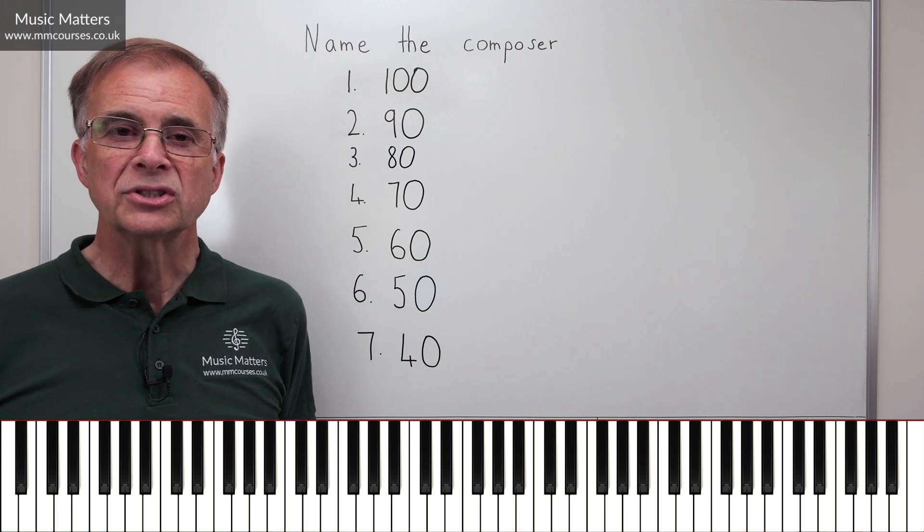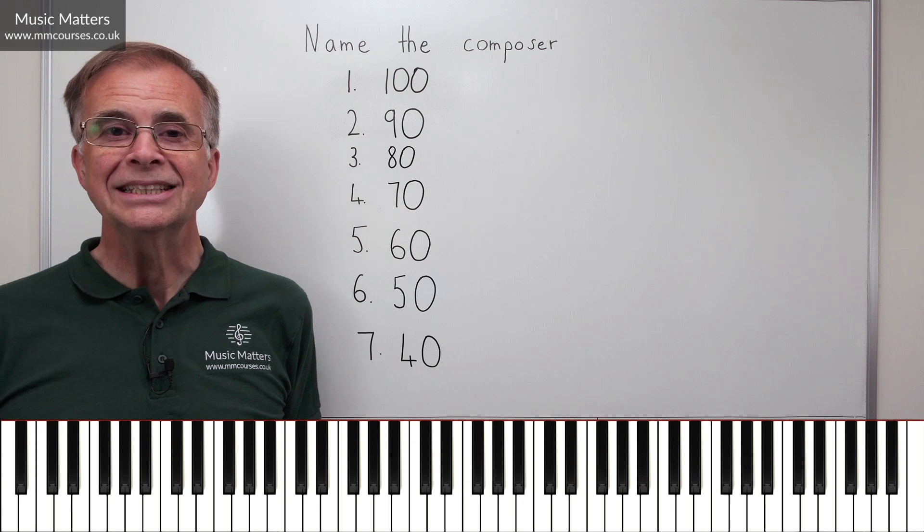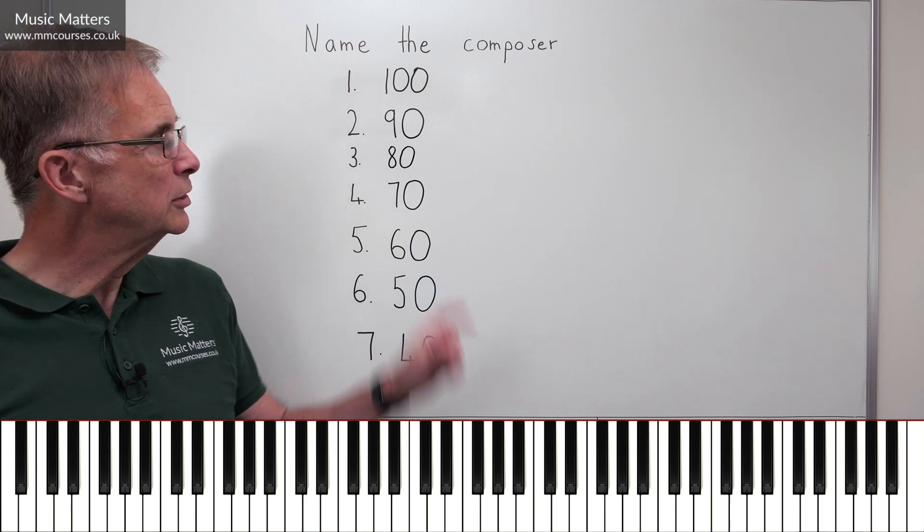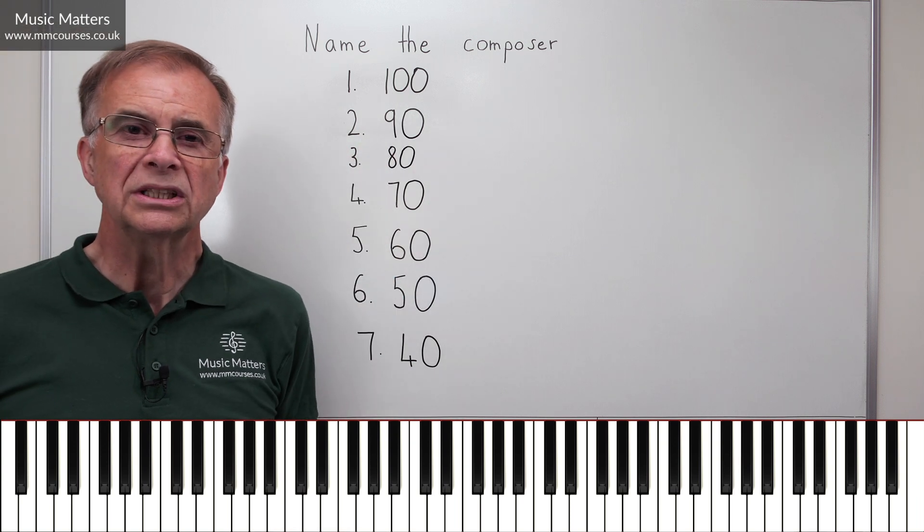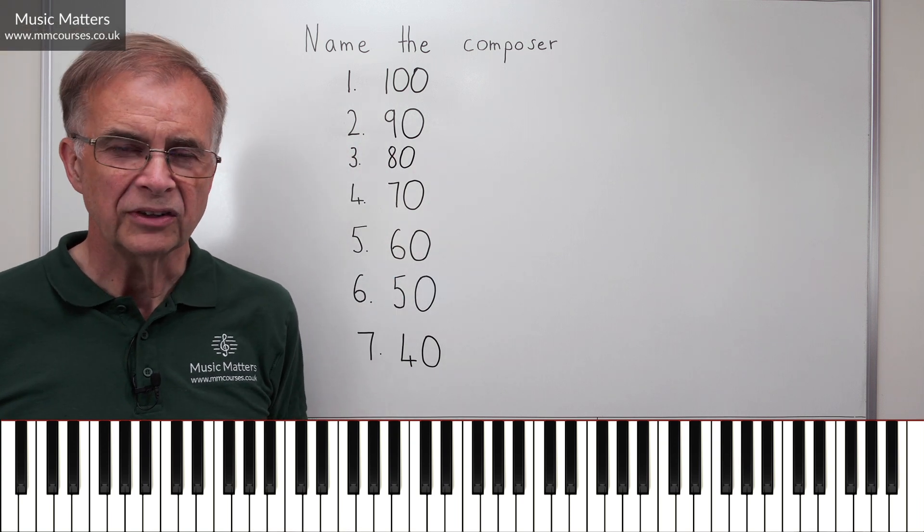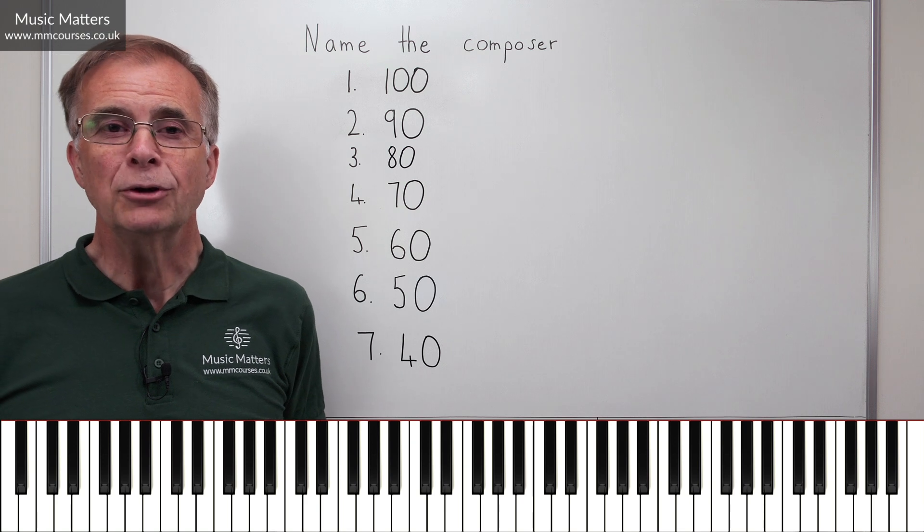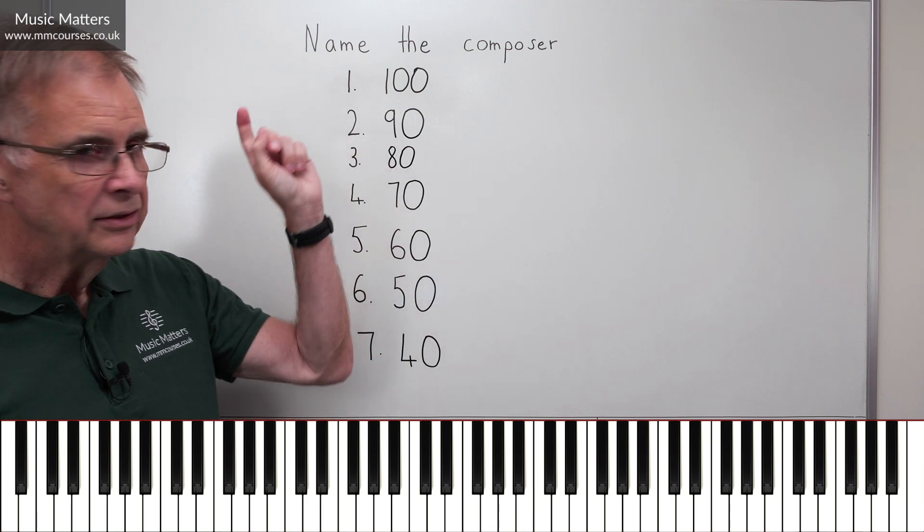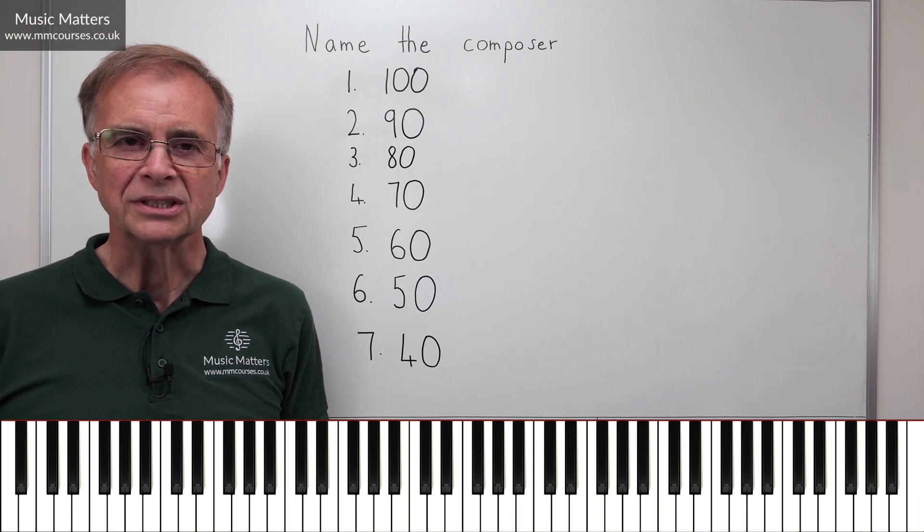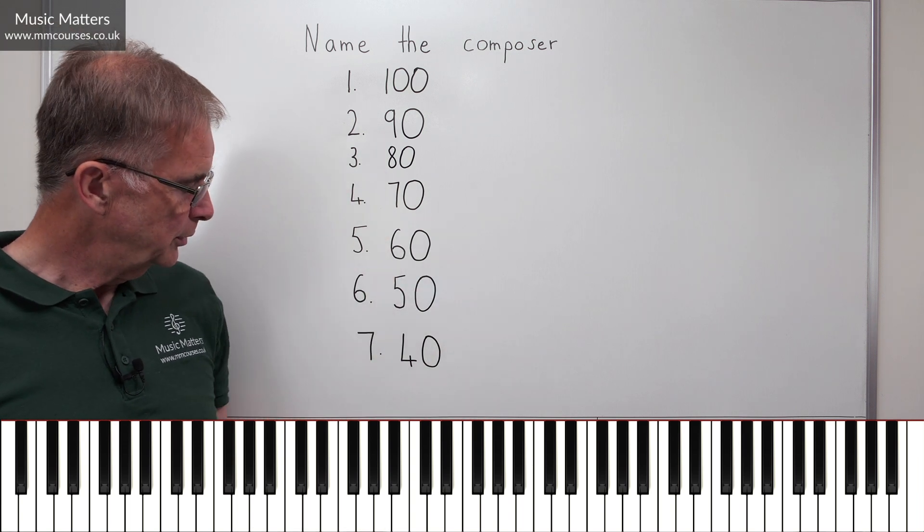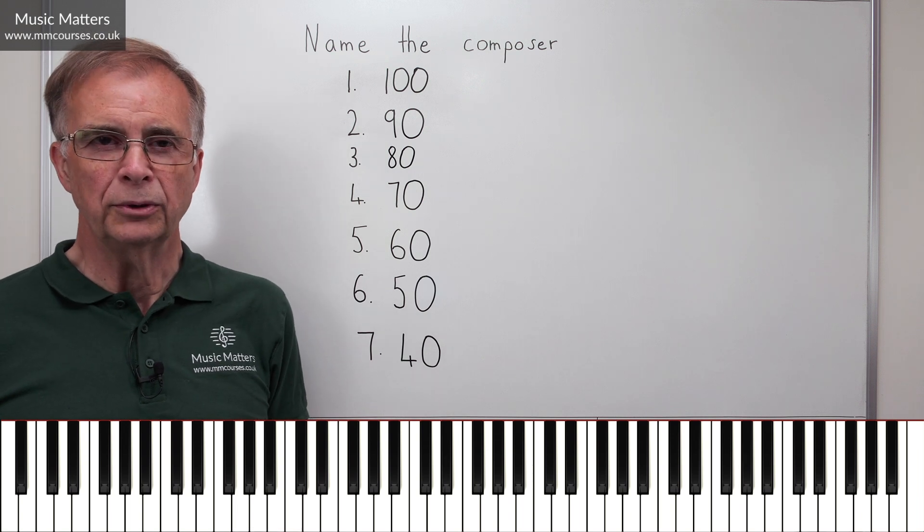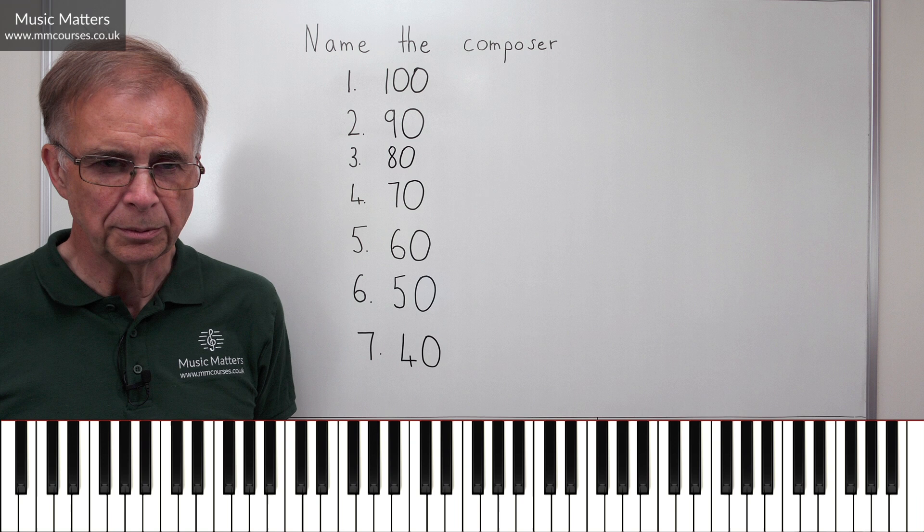I'm going to give you seven clues, and if you manage to name the composer in question on the first clue, you will be awarded 100 points. If you manage to name the composer accurately on the second clue, then you can have 90 points, and so on, all the way down to clue number seven, which is still worth 40 points, which sounds perfectly respectable, doesn't it?